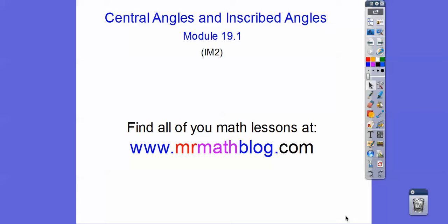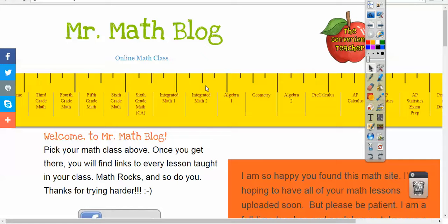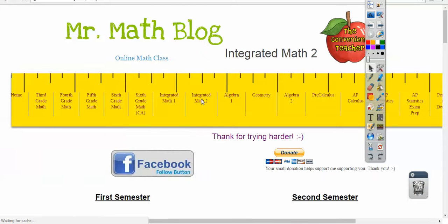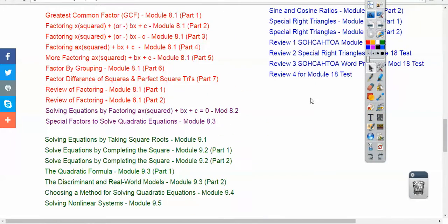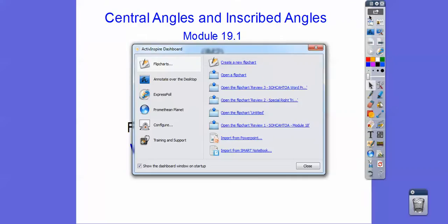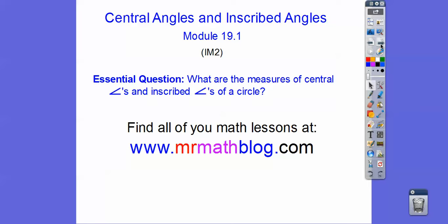This lesson is Central Angles and Inscribed Angles. We're now in Module 19. All your lessons can be found at that website — make sure you click Integrated Math 2. So our question here is: what are the measures of the central angles and inscribed angles of a circle?